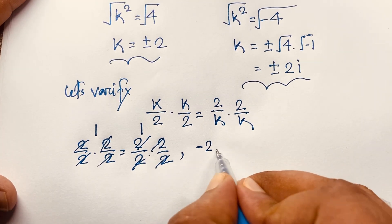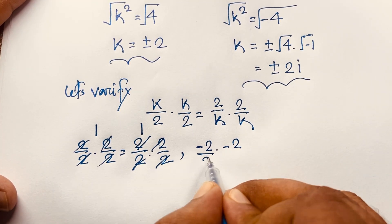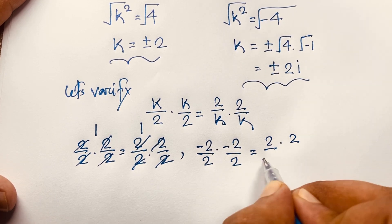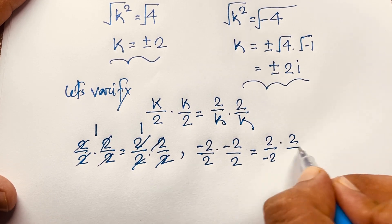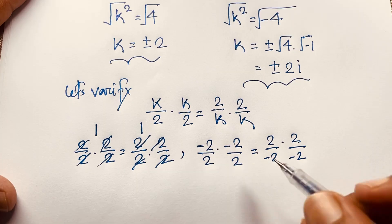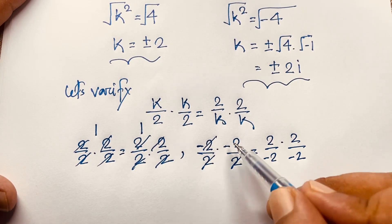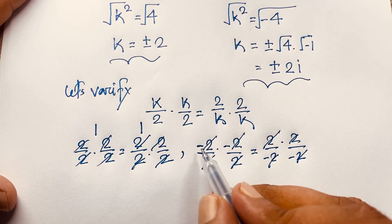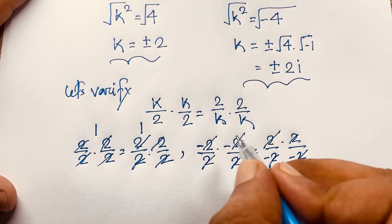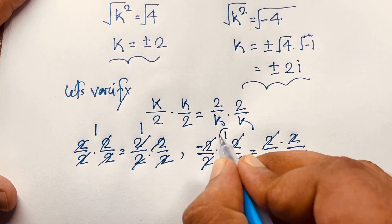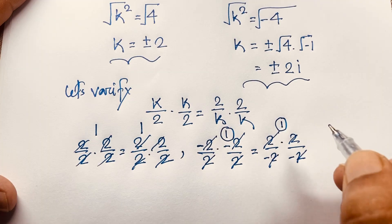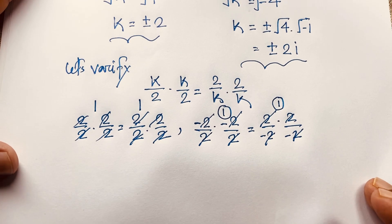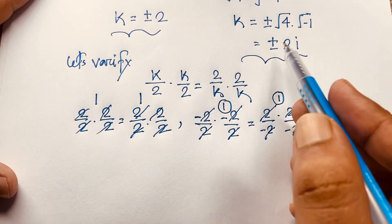For k equals negative 2: we get negative 2 over 2 times negative 2 over 2 equals 2 over negative 2 times 2 over negative 2. These cancel out and we get negative 1 times negative 1 equals 1, and the right side is also positive 1. Left hand side equals right hand side, so k equals negative 2 is verified.